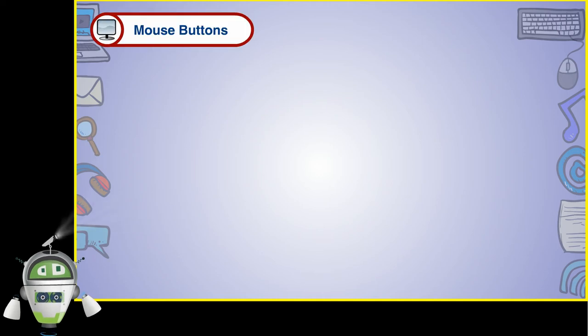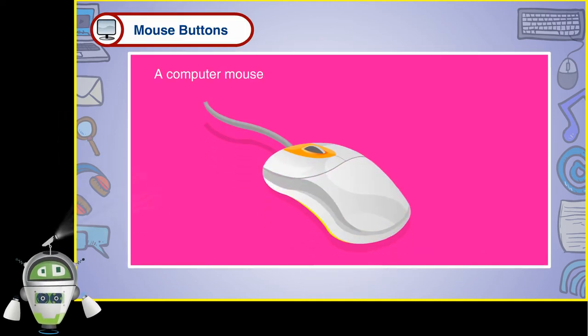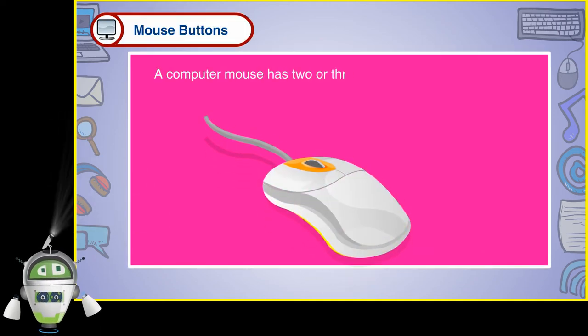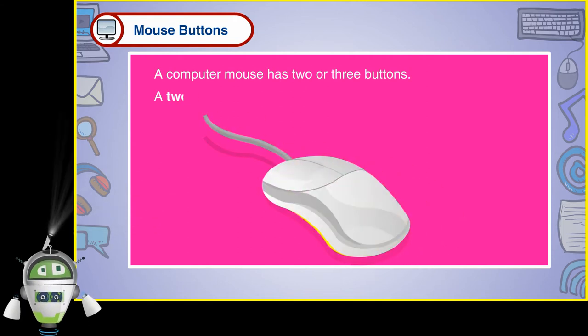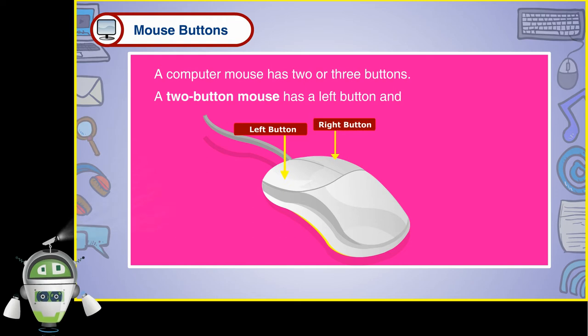Mouse buttons. A computer mouse has two or three buttons. A two-button mouse has a left button and a right button.